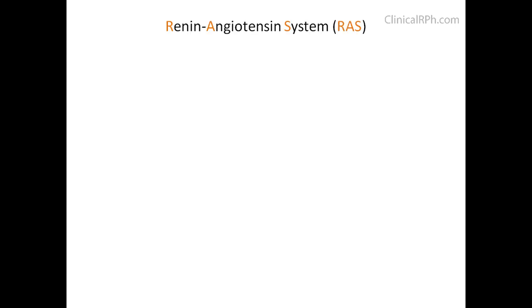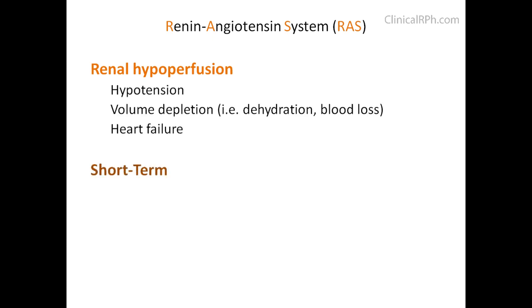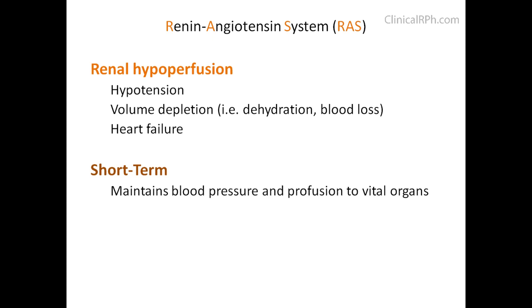Let's look at the renin-angiotensin system, also known as RAS. When there is a decrease in blood flow or pressure to the kidneys — such as from hypotension, volume depletion, or heart failure — the RAS system is activated in the short term to maintain blood pressure and perfusion to vital organs.